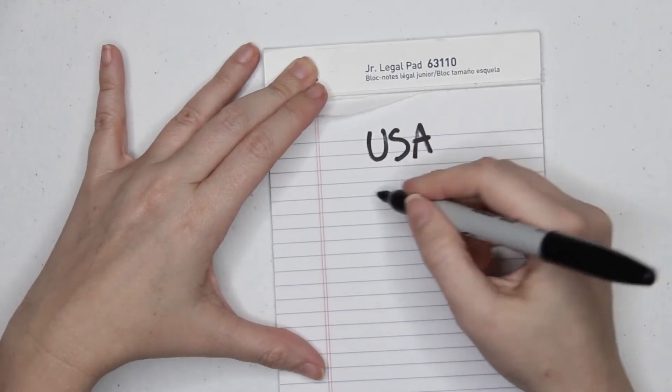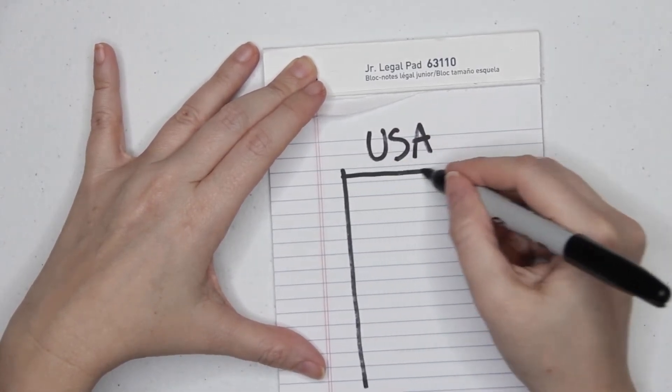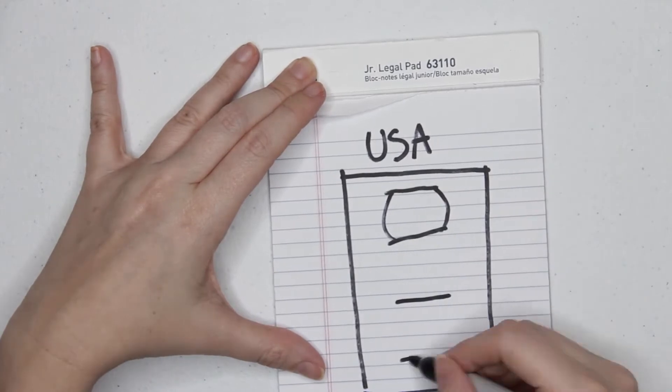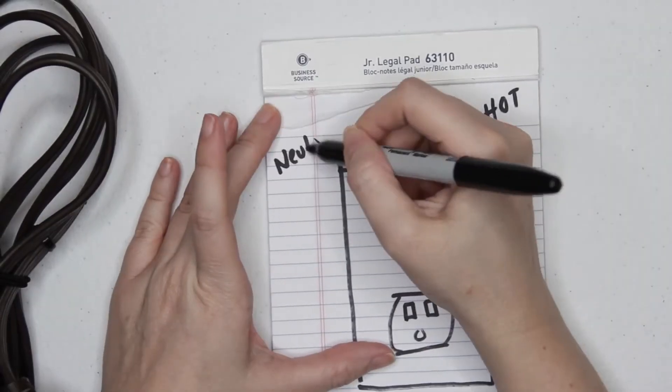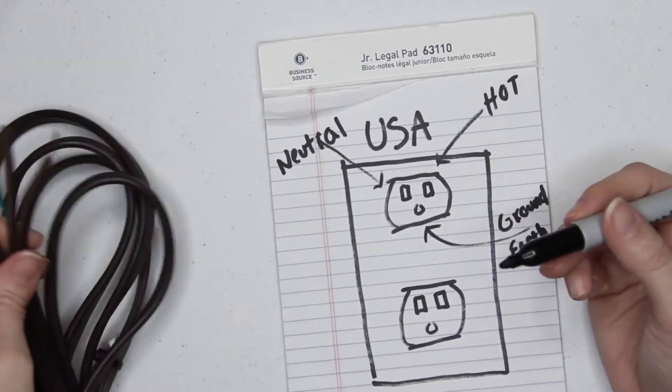I know the configuration of a typical US outlet. Top right is hot, top left is neutral, bottom circle is ground.